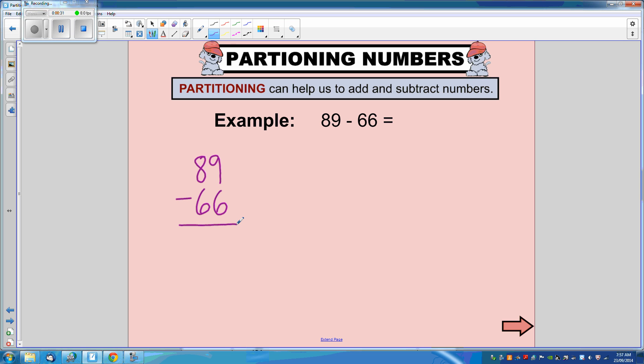We can partition 89 and say that 89 is equivalent to 80 plus 9. And 66 when we partition it is 60 plus 6.